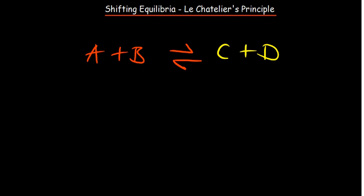It always wants to go back to equilibrium. So we need to understand the effects of all these things: increase in concentration of either the reactants or the products, decrease or increase in volume, and decrease or increase in temperature for different kinds of reactions. Now let's see what the summary is. What happens if we increase the concentration of, let's say, A or both?